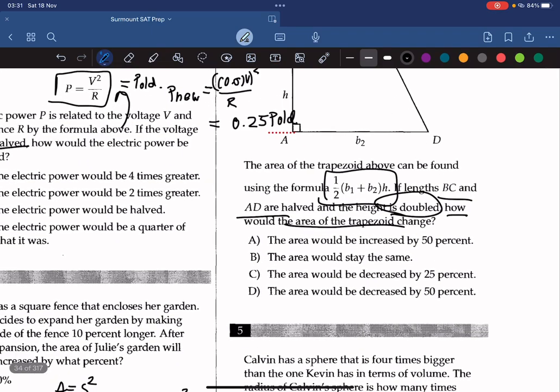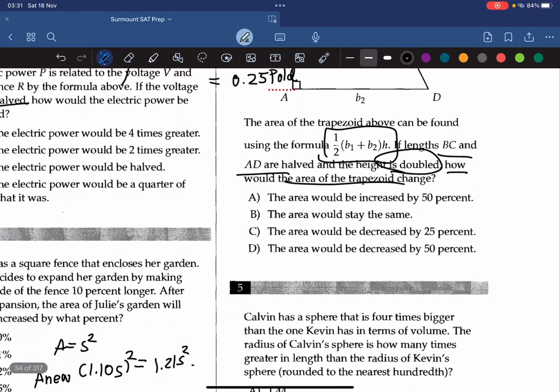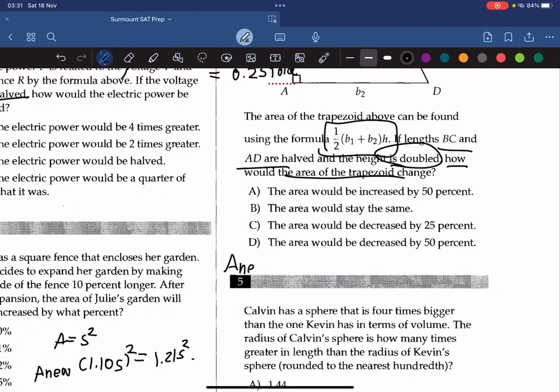Alright, so we're given this old formula. We have to rewrite it like we've done for the previous questions. So let's do that right now. A new will be equal to 1 over 2. So if it's halved, it's 1 over 2 B1 plus 1 over 2 B2. And since the height is doubled, 2H.